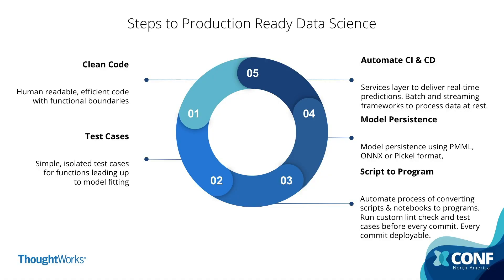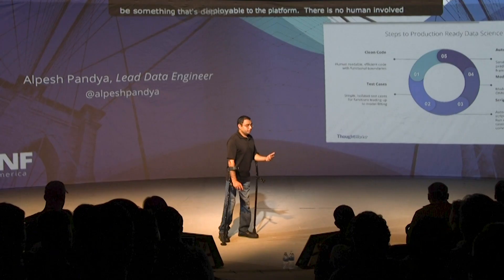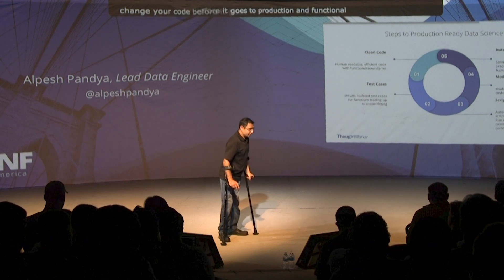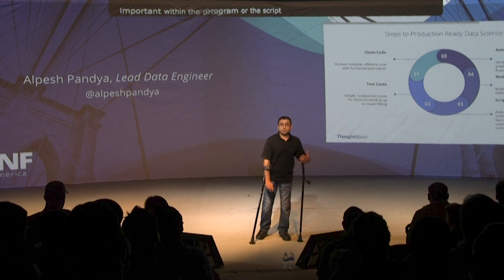In a fully automated structure, data scientists need to write clean code - this is where the mindset change and learning curve come in. They need to start writing better code with well-defined variables and functional boundaries. They don't need to be full-fledged expert programmers, but their code should be deployable to production, because the platform is not going to write code for them and there is no human involved to change it before it goes to production.